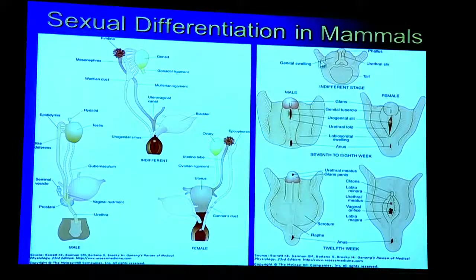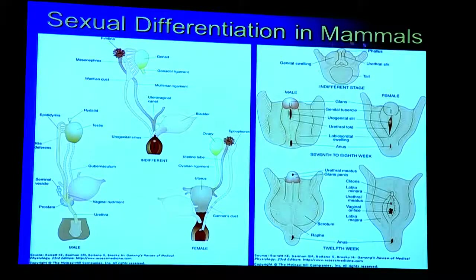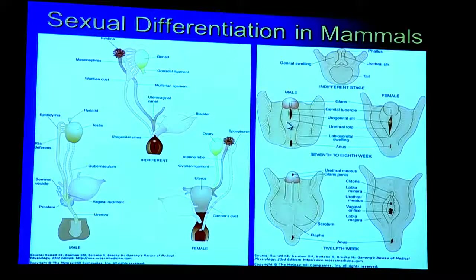We all start out the same way — internally and externally — in the indifferent stage, where we begin internally as hermaphrodites, with the beginning of both the female and male systems. In the female, the male system automatically withers away with no hormone required, and the female system develops automatically. In the male, one hormone causes the female system to wither away, and testosterone causes the male system to develop. By the seventh to eighth week, male and female start to look different as the testes form and secrete testosterone. By the twelfth week, however the genitals look, that's how they'll look at birth.